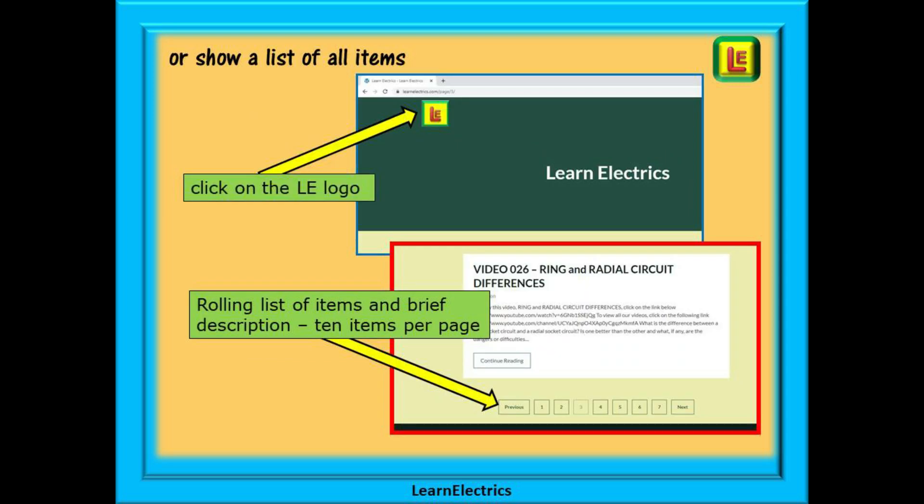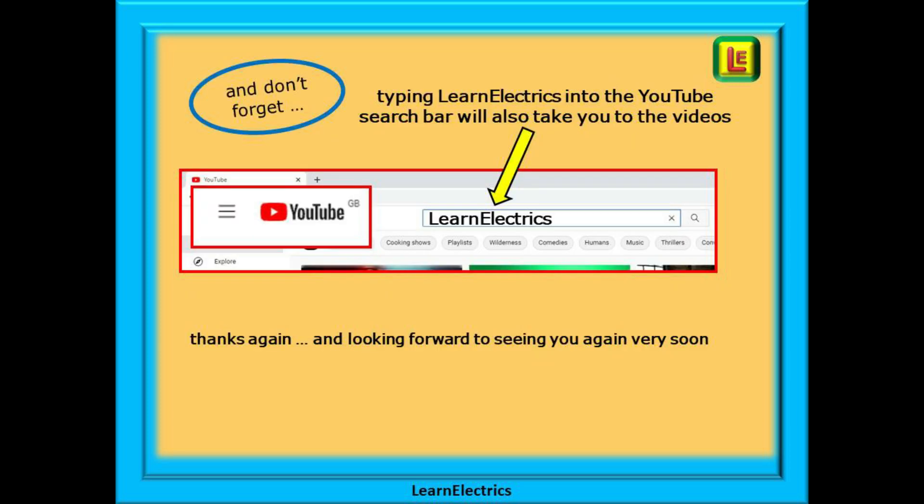Or you can browse through a list of all the available items and videos. To do this, click on the LE logo on the top left of the home page, and all of our items and videos will be shown. There will be 10 items shown on each page, and at the bottom of each page is a page selector, page 2, 3, 4, and so on, that will bring up the next 10 items or videos in the list.